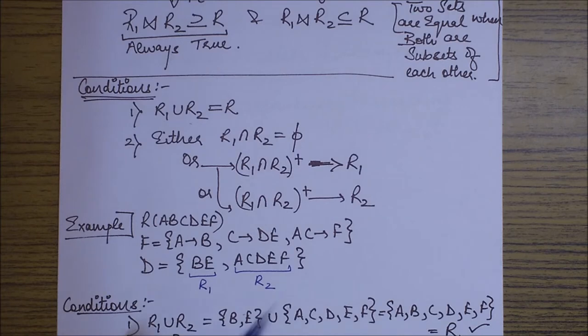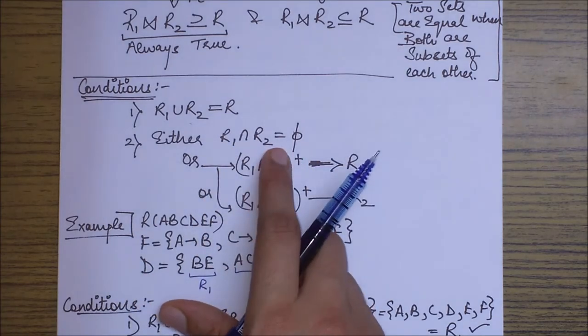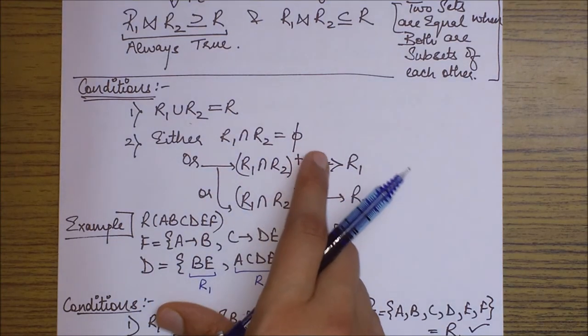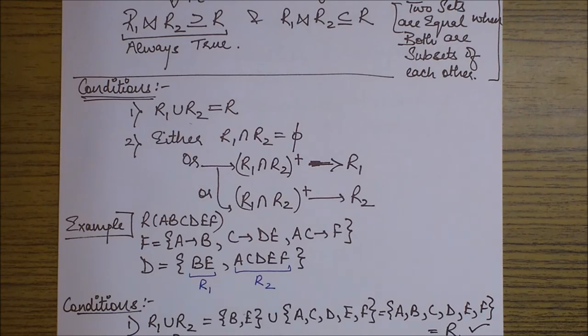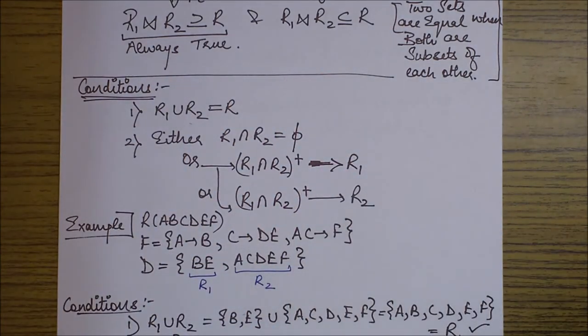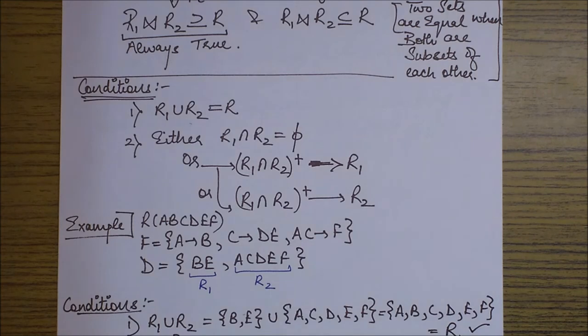The next property says that either the intersection of R1 and R2 should be phi. Now intersection in terms of attributes again. The entire thing, the entire set of rules is based on the attributes, or you can also say attribute names.